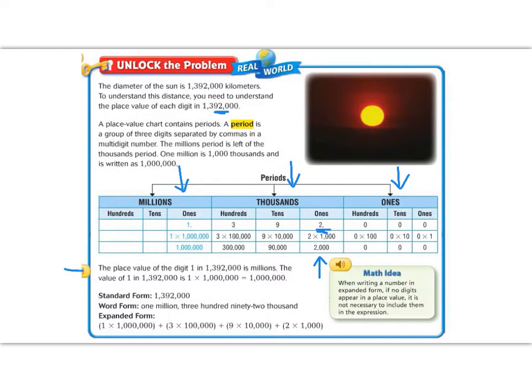Let's continue reading below. The place value of the digit 1 in 1,392,000 is in the millions place. The value of the 1 in 1,392,000 is 1 times 1 million, which is 1 million. So if we look in the millions column now, we have a 1 as the place value. Its expanded form is 1 times 1 million, and 1 times 1 million equals 1 million. So we could write this, remember from fourth grade, in three different ways: standard form, word form, and expanded form.